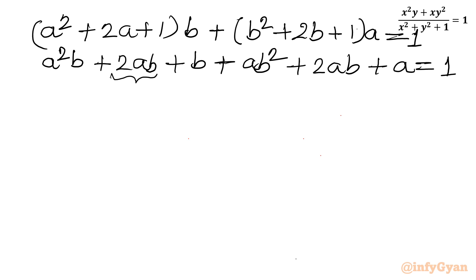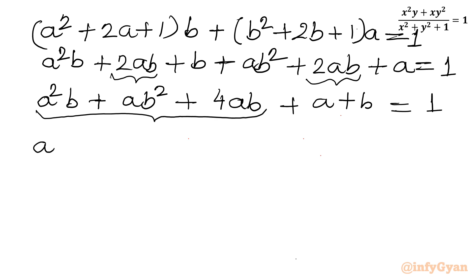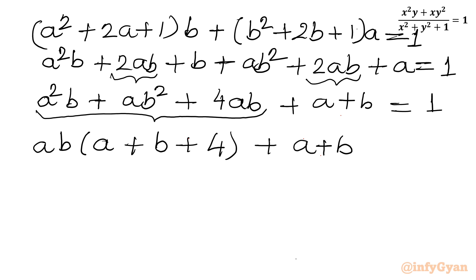Combining like terms — 2ab and 2ab become 4ab — so we get: a²b + ab² + 4ab + a + b = 1.